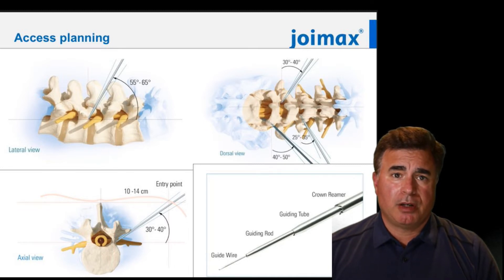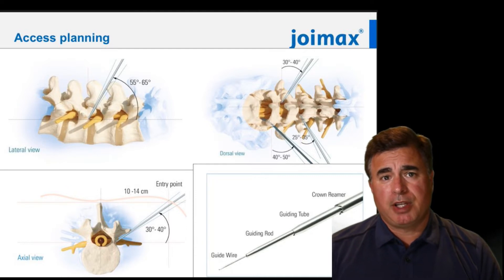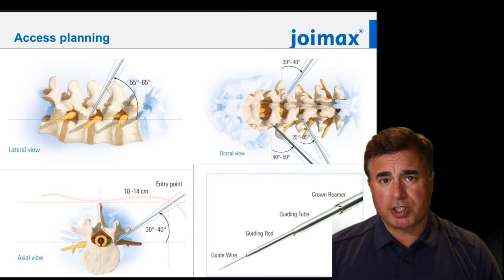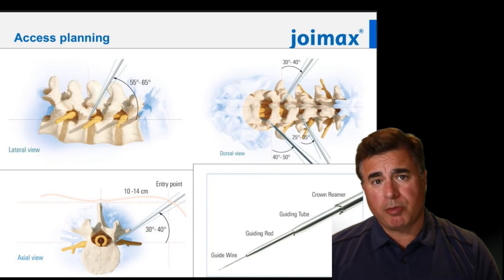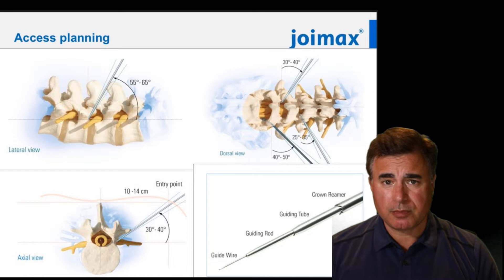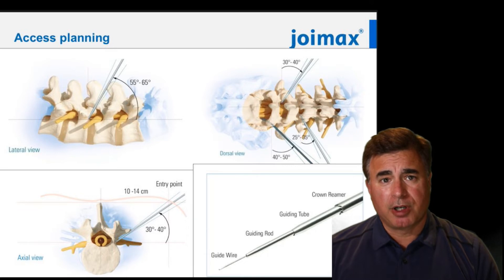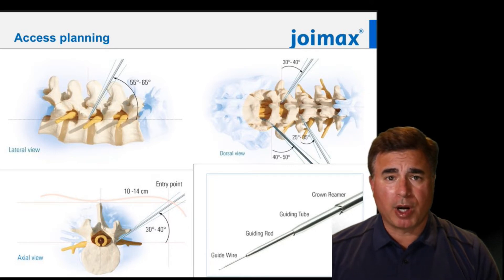The skin incision will get more medial the more rostral you go. At L5-S1 my incision is 14 centimeters off of the midline, whereas at L1-2 it may only be 6 centimeters off of the midline. It utilizes the staged guide wire access principle, or a modified Seldinger technique, where a series of serial dilators is placed down over a guide wire.